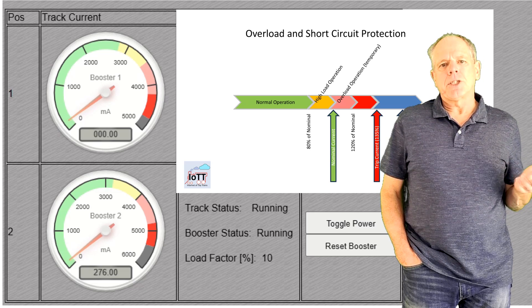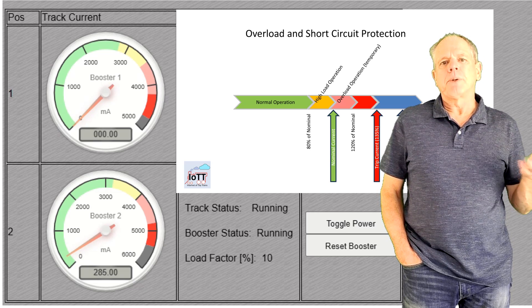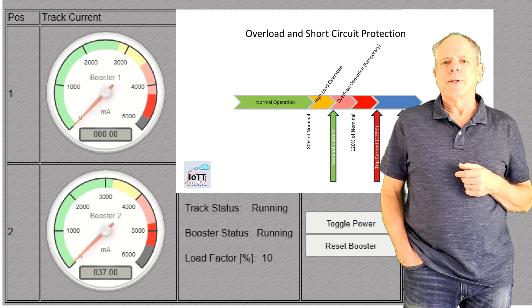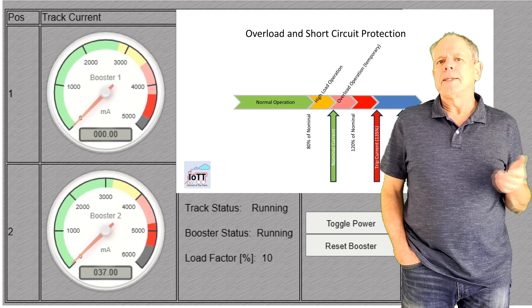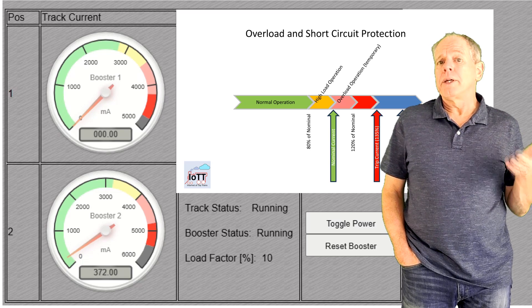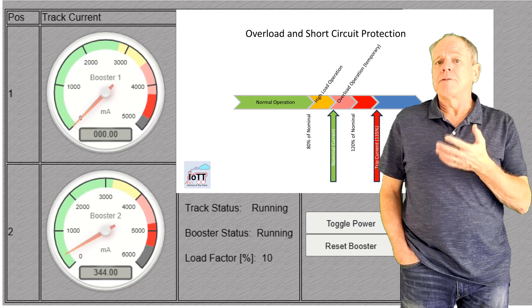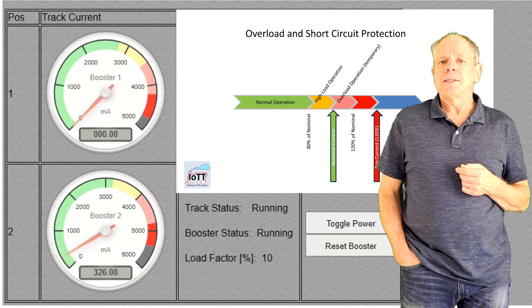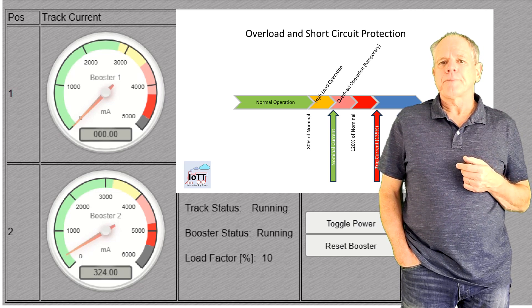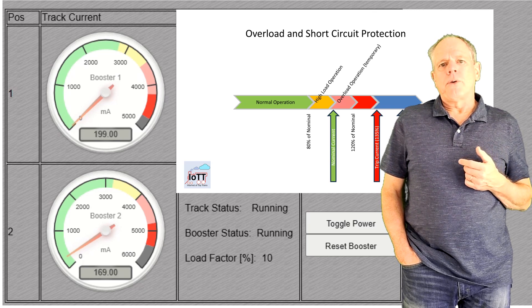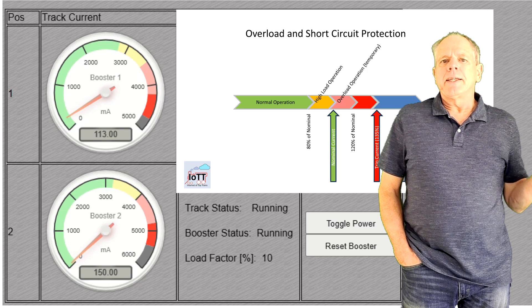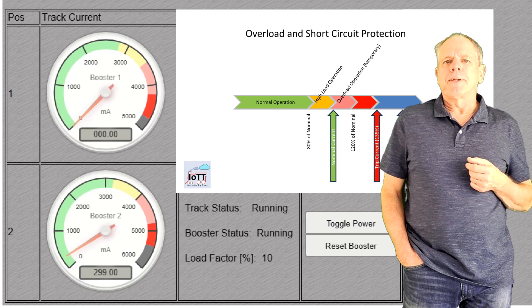The light red section marks the acceptable temporary overload and goes up to 120% of the nominal current. It is okay to operate in this zone, but the booster will go into overload shutdown after a while. How long it takes depends on the fuse mode settings and the current amount. The dark red zone is sort of a safety buffer and the border between dark red and gray indicates the short circuit trip current.